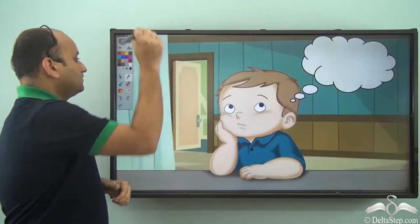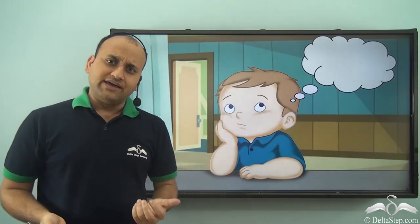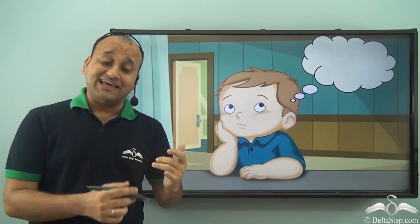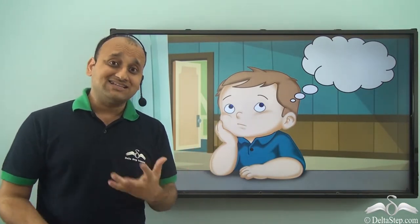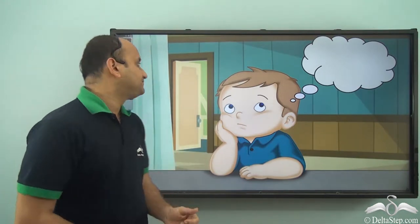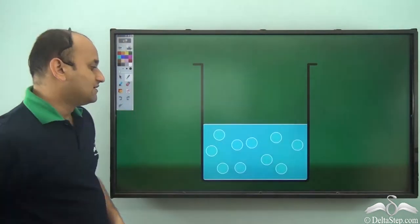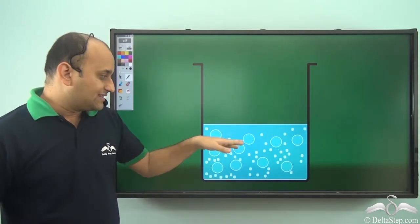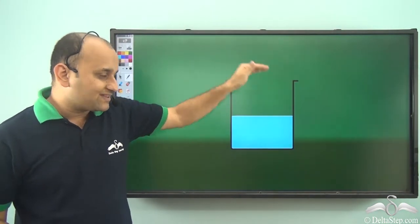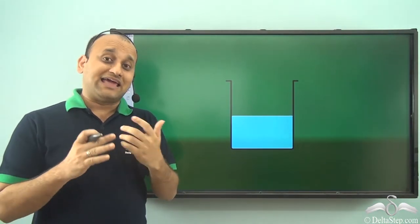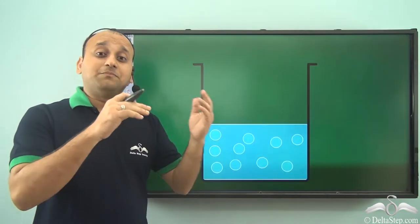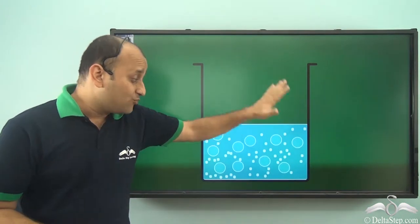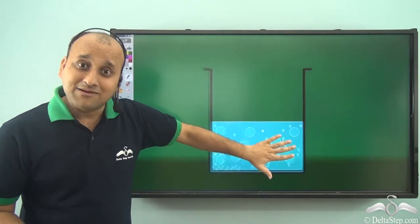So why was the professor able to add so many things one by one, and everything went inside the jar and settled? The reason is the gap between the particles. When there is a gap between particles and you add another particle that is small enough to fit in that gap, the particles will settle in those gaps. And as a result, you can add more particles in the same medium.